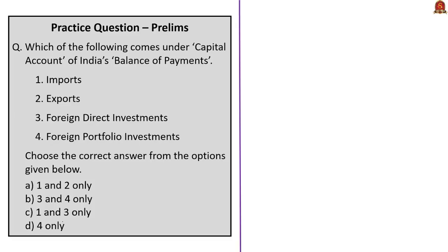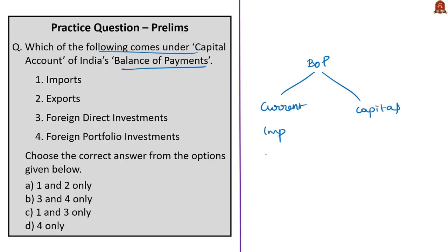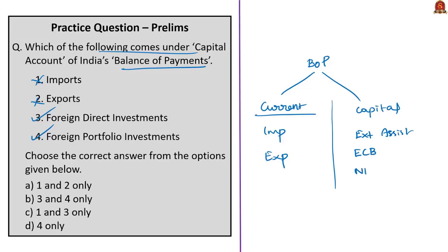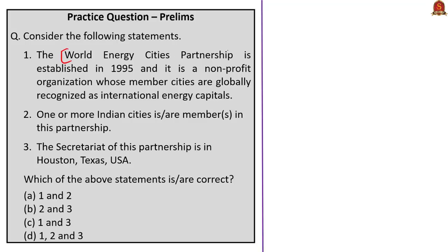This question is with respect to the balance of payments — which items come under the capital account? The balance of payments is divided into two accounts: current account and capital account. Imports and exports come under the current account, so options one and two will not be part of the capital account. Both foreign portfolio investment and foreign direct investment are capital investments under the capital account. Other items include external assistance, external commercial borrowings, short-term credits, and NRI deposits. The correct answer is option B.